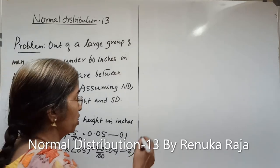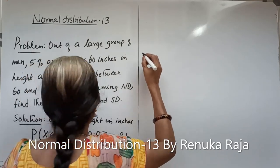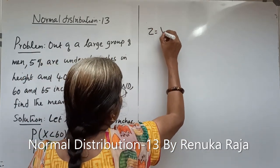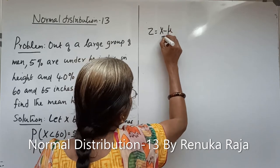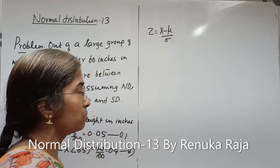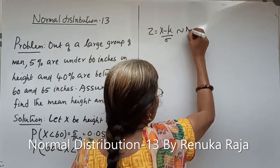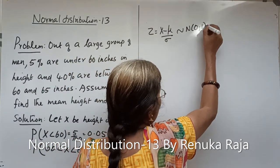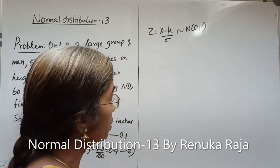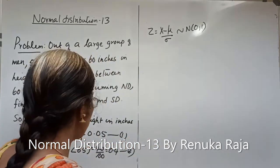Now we know x follows N(μ, σ²). We can obtain the standard normal by the transformation z equals x minus μ divided by σ, and it follows N(0,1) which is the standard normal distribution. This process is called standardization.